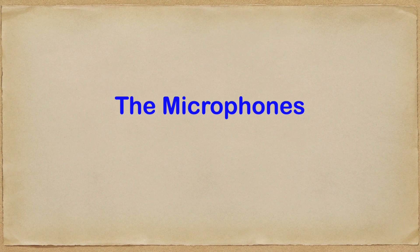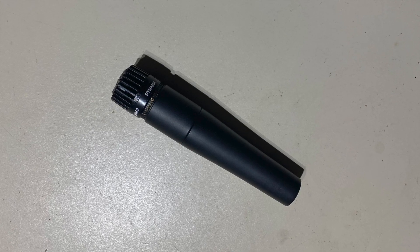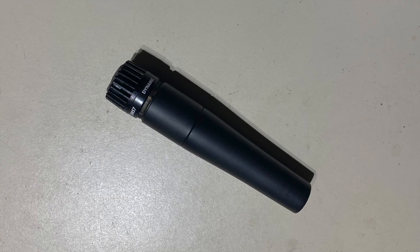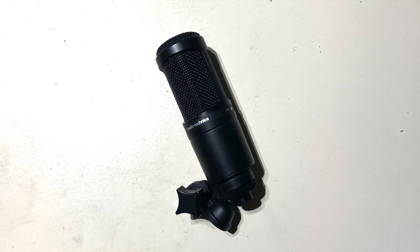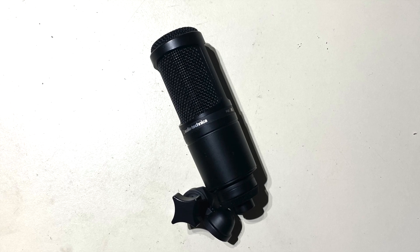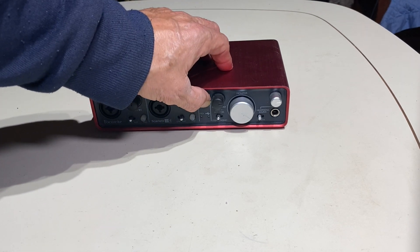Let's talk about some considerations when using microphones with an audio interface in GarageBand. There are two types of microphones: dynamic and condenser. The only thing you have to concern yourself with is to make sure that you have phantom power on when using a condenser microphone. You can turn phantom power on for this audio interface by pressing the 48V button.